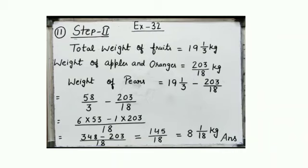Step 2: total weight of fruits is 19 1/3 kg. Weight of apples and oranges is 203/18 kg — which came from Step 1 by adding apples and oranges. Weight of pears = 19 1/3 minus 203/18. When you solve it, the answer is 145/18. It is an improper fraction, so we convert it to a mixed numeral: 8 1/18 kg.